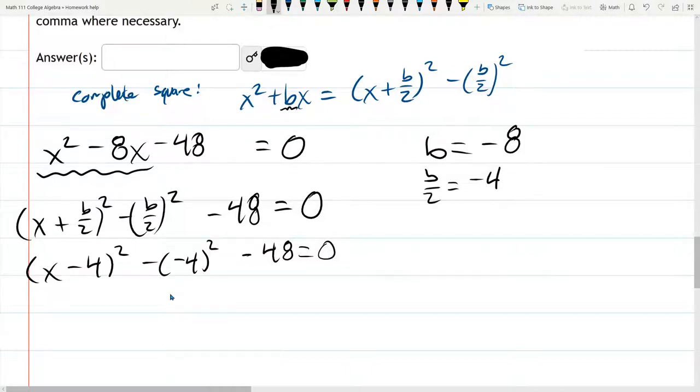So negative 4 squared is positive 16, but there's still one more negative. I have some subtraction I got to do.